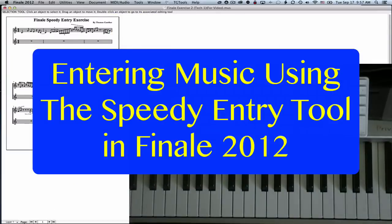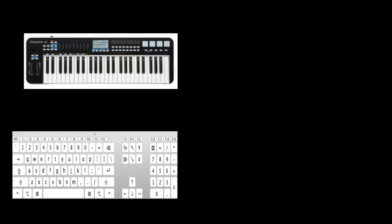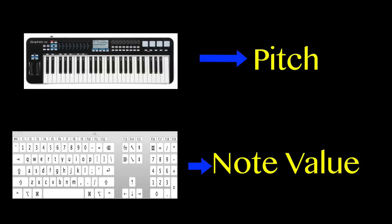So let me show you how to work with Finale and the speedy entry tool. The best and fastest way to enter music with the speedy entry tool is using a musical keyboard, especially when you want to enter more than one note at the same time. Here's how this works: you play the pitch on the musical keyboard and enter the note value on the computer keyboard by pressing a number. Don't release the keys on the musical keyboard until you enter the note value.